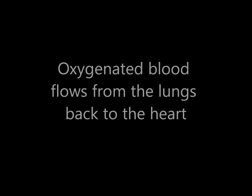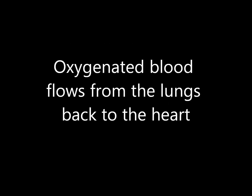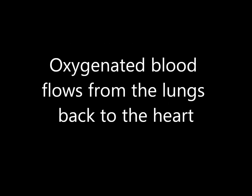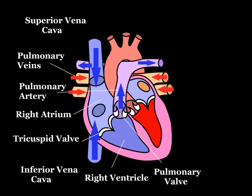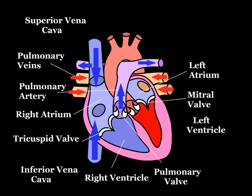Oxygenated blood flows from the lungs back to the heart by way of the pulmonary veins and into the left atrium. The left atrium fills with blood and contracts, opening the mitral valve and filling the left ventricle.